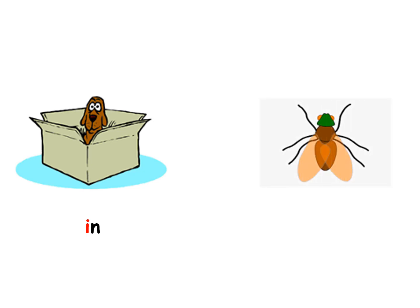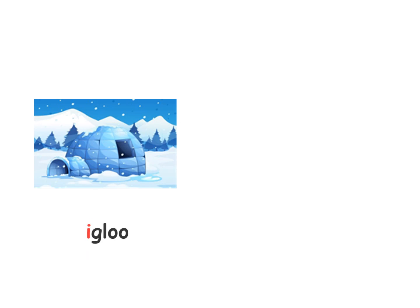What's this? It's an insect. What do you think about this one? It's an igloo.